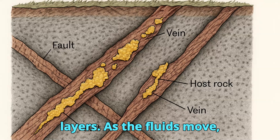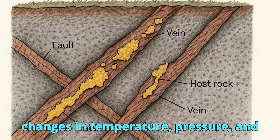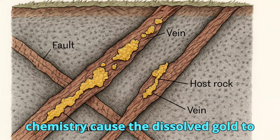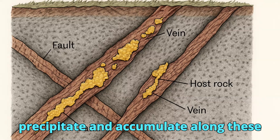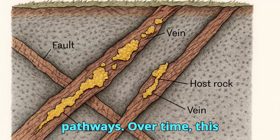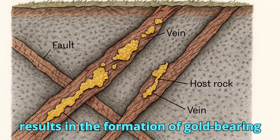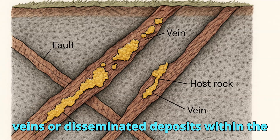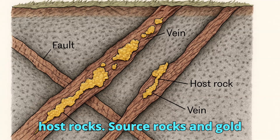As the fluids move, changes in temperature, pressure, and chemistry cause the dissolved gold to precipitate and accumulate along these pathways. Over time, this results in the formation of gold-bearing veins or disseminated deposits within the host rocks.